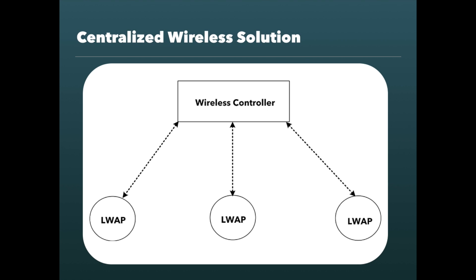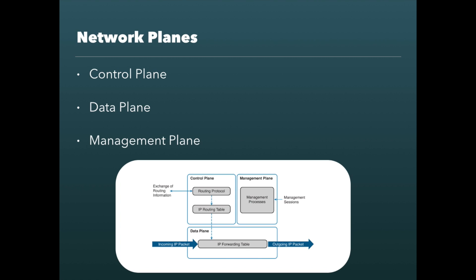Also on the network there is a dedicated appliance called a wireless controller with a GUI, a graphical interface. This is the appliance where you would configure all of your wireless networks and the security that is needed. The access points connect and register to the wireless controller where they get their configuration for what wireless networks to announce to wireless clients. This model makes managing wireless networks easy because you can manage your entire wireless infrastructure from a single place. With SDN, it is a very similar model.